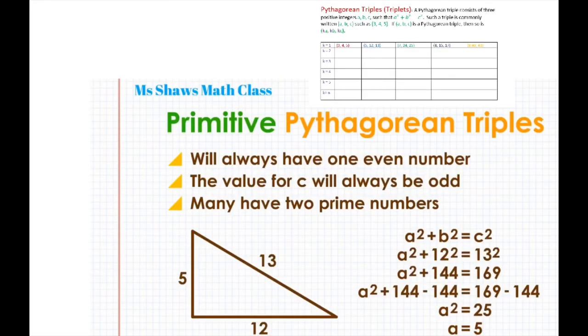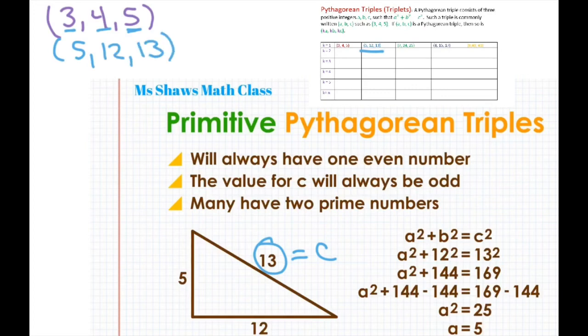Okay, so your primitive Pythagorean triples will always have one even number. So if we look at 3, 4, 5, we have one even number, which is 4. And the value for c, that means this number here, is always odd. So our c is odd. And many have two prime numbers. In our case, we have two prime numbers. Our next primitive triple is 5, 12, 13. Our c is always large, so it's always odd. It's the largest. Our middle number is even. And 5 and 13 are both prime.